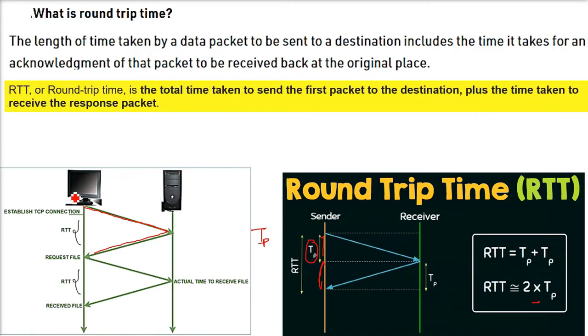RTT, or round-trip time, is the total time taken to send the first packet to the destination plus the time taken to receive the response packet.